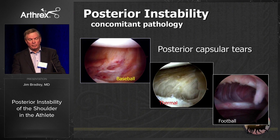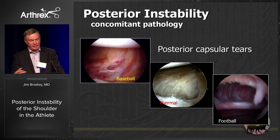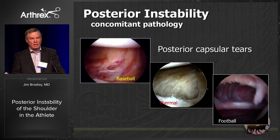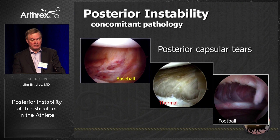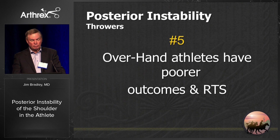Here are examples of posterior capsular tears — a baseball player, one with prior thermal treatment, and a football player. You have to fix that capsule first and then determine the amount of stability you want them to have before doing anything else.